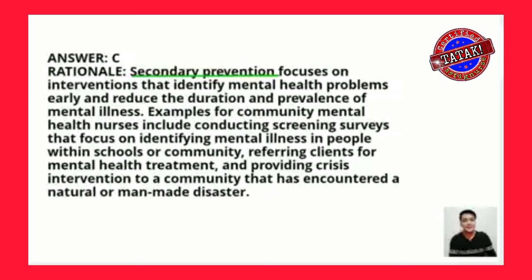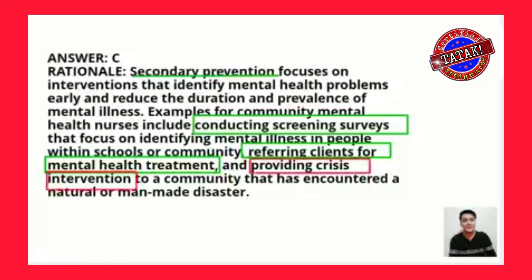Secondary prevention focuses on interventions that identify mental health problems early and reduce the duration and prevalence of mental illness. Examples for community mental health nurses include conducting screening surveys to identify mental illness in schools or communities, referring clients for mental health treatment, and providing crisis intervention to a community that has encountered a natural or man-made disaster. In short, crisis intervention is part of secondary level of prevention.